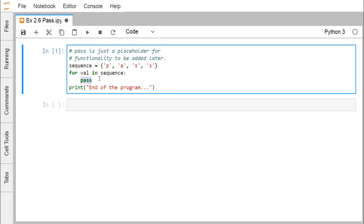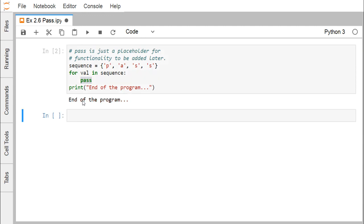Pass is not having any, will not produce any required output on the screen. So as a result of that, if I go on executing this code, only this end of the program, this statement is getting printed after completion of this for construct.